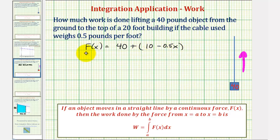So if we simplify this, we have f of x equals 50 minus 0.5 x.